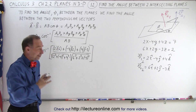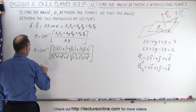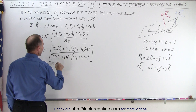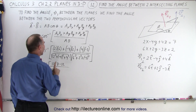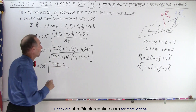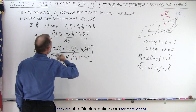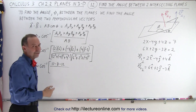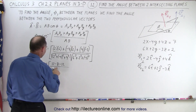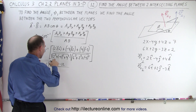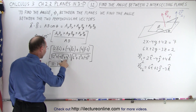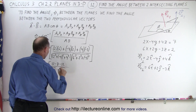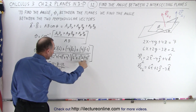All we have to do is simplify that. Theta is equal to the inverse cosine of 12 minus 8 minus 12, divided by — and we should take the absolute value of that, though we can manage with a negative value. We get 16 plus 16, that's 32 plus 4, which is the square root of 36, times the square root of 36, 40, 49.